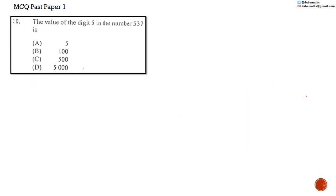Number 10. The value of the digit 5 in the number 537 is A, 5, B, 100, C, 500, or D, 5000. The digit 5 is in the 1's, 10's, 100's column. So the 5 represents 500, so the answer is C. The link to my video on place value is in the description below.